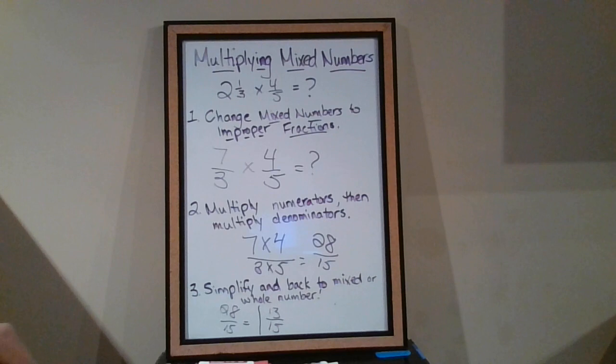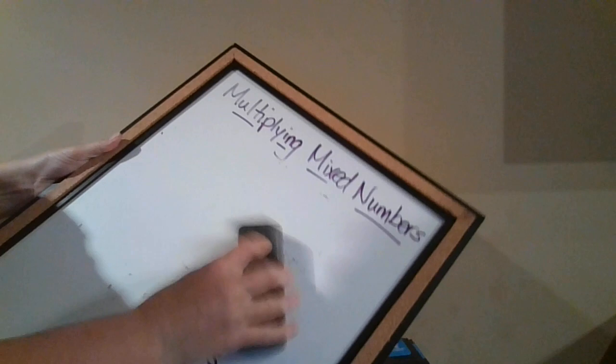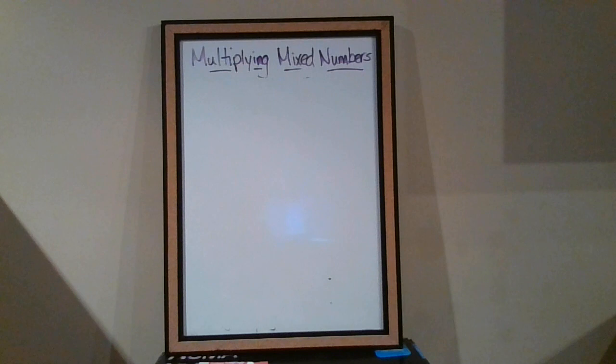For this question, I kept it kind of simple where we had one mixed number and one fraction. But if we had two mixed numbers, it would be the same steps. And we can do one like that all together so we can see what that looks like. It's the exact same steps, it's just a tiny bit longer, or maybe more work.